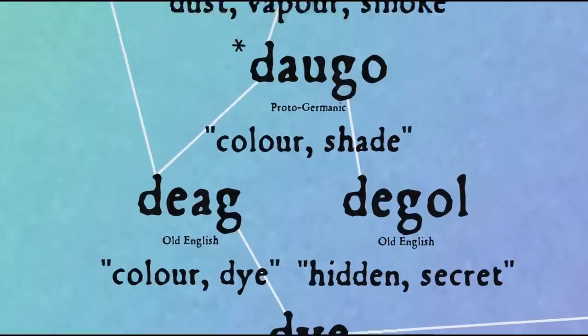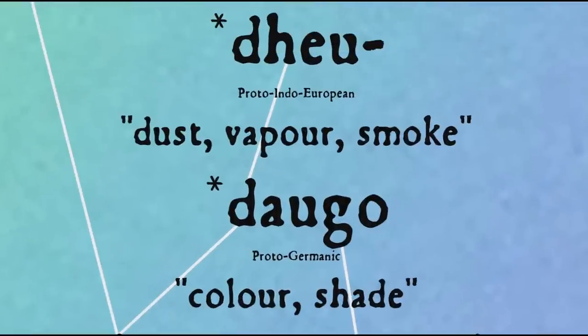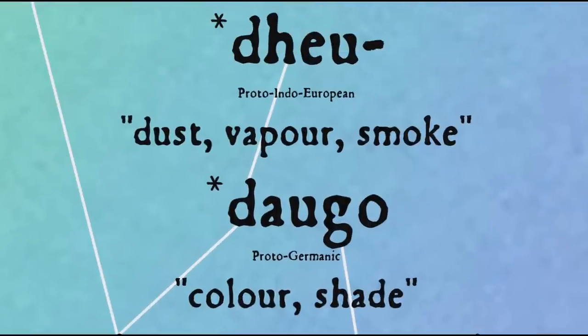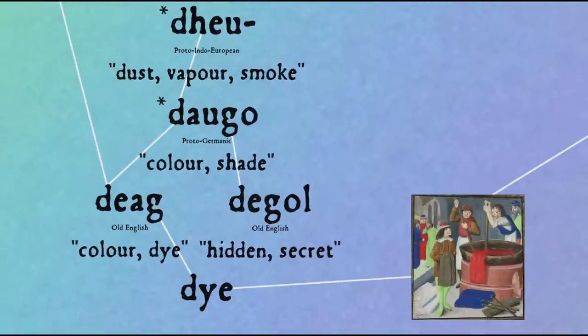Beyond that, 'dye' might come from the Proto-Indo-European root 'dheu', meaning dust, vapour, smoke. So along with 'colour' and 'drug', 'dye' also seems to be connected with the idea of something hidden or secret.